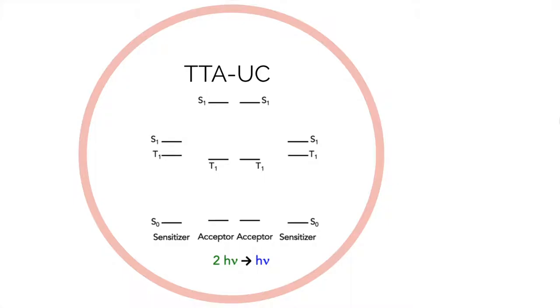Photon upconversion via triplet-triplet annihilation is a two-photon-in, one-photon-out process. In the system, there will be sensitizer molecules as well as acceptor molecules. First, sensitizer molecules will be excited to the first excited singlet state, then go through a fast intersystem crossing to the triplet state. Then triplet energy will be transferred from the sensitizer molecule to acceptor molecule. When two acceptor triplets close to each other, one will go back to the ground state and the other will go to the first excited singlet state.